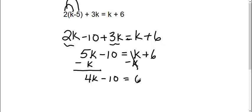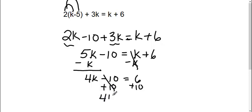Now, again, I'm still trying to get k by itself. I have a minus 10; I need to move that to the other side. So, we always do the opposite — we're going to add 10 to both sides. Therefore, this side is gone. I get 4k equals 6 plus 10, which is 16.